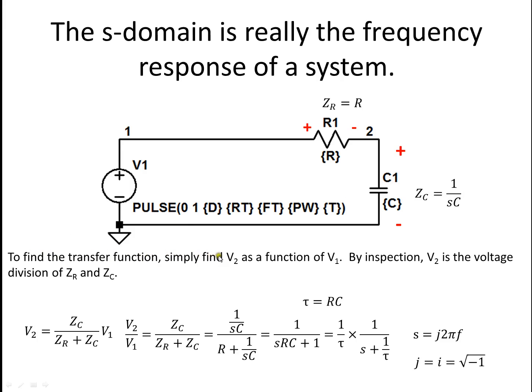To find the transfer function we simply find V2 as a function of V1, and by inspection, I know you love that phrase, V2 is the voltage division between ZR and ZC and you can just write that out. You're really used to just putting resistances here but impedance is easy as well.